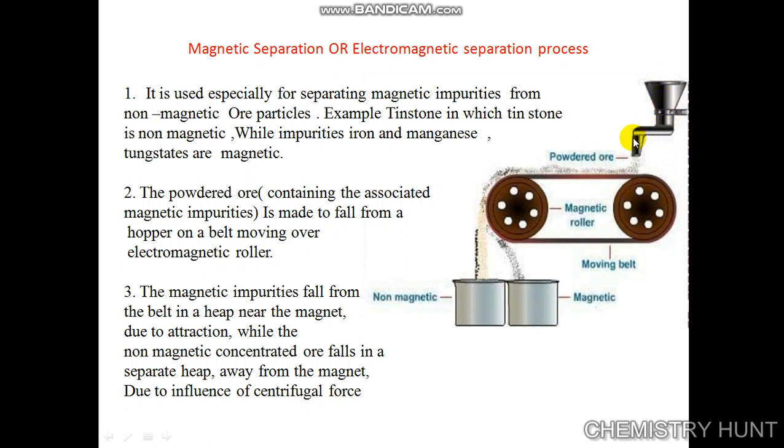It is then made to fall from the hopper to the conveyor belt over the electromagnetic roller. Here you can see the magnetic impurities fall from the belt in a heap near the magnet due to attraction.